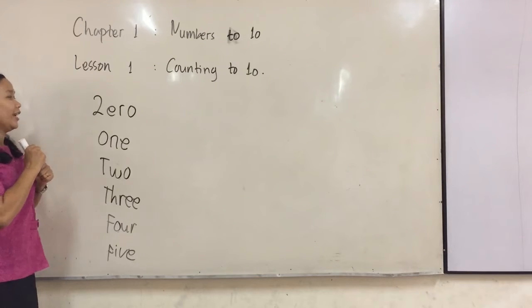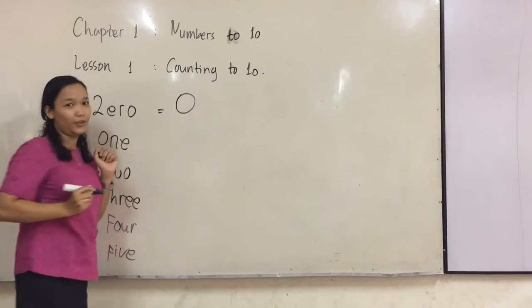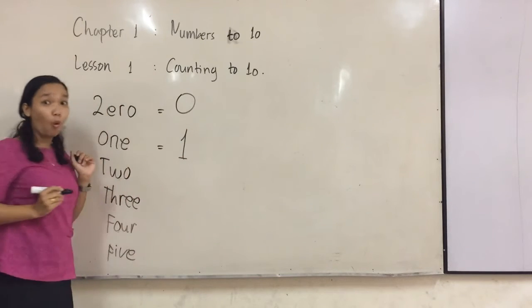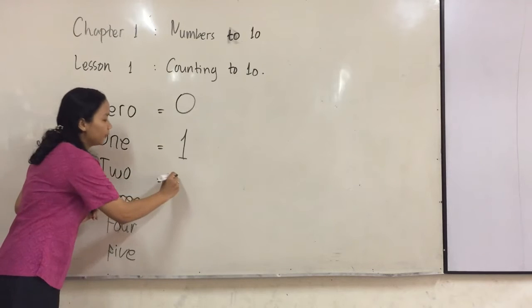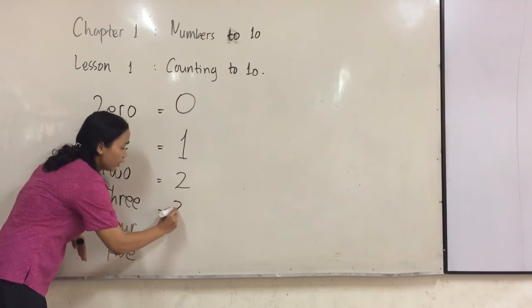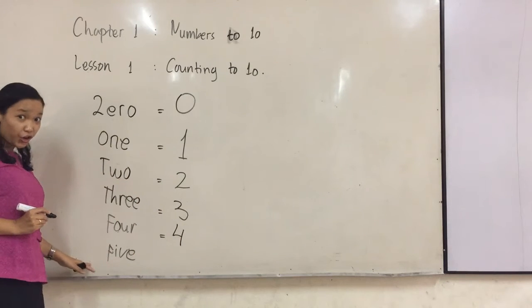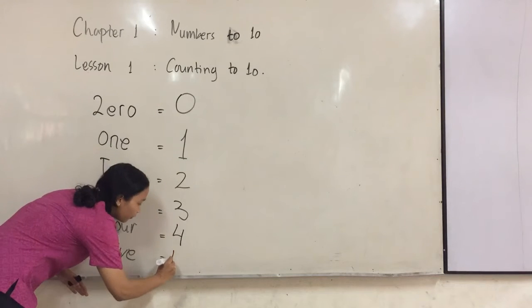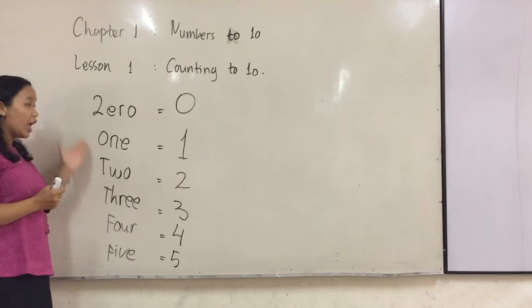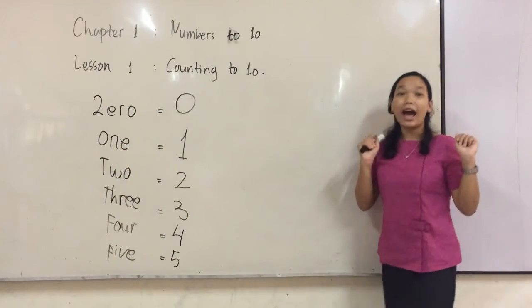Now, you turn to write the numbers. Zero. Do you know how to write zero? Good! Zero. And then one, one. Two, two. It's like a Z but they're not different. Three, three. And here is four, four. And last, it's like here, is five. Five, five. Our title is numbers to ten. And then it's like here, zero to five. So your turn is to write down six until ten.